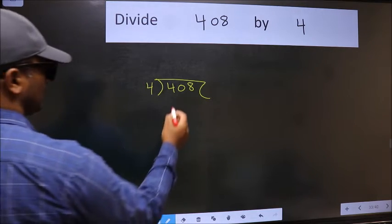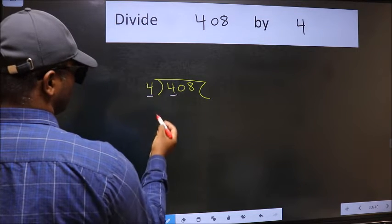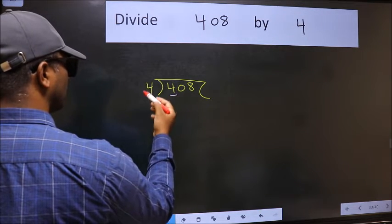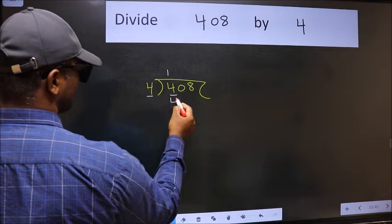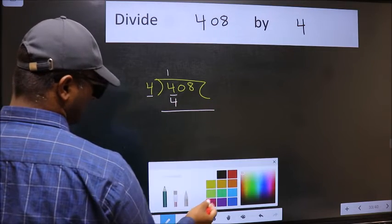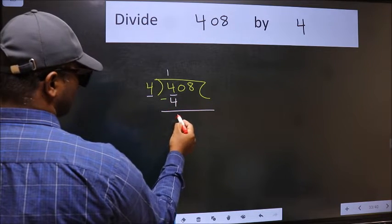Next, here we have 4. Here also 4. When do we get 4 in the 4 table? 4 times 1 is 4. Now we should subtract. We get 0.